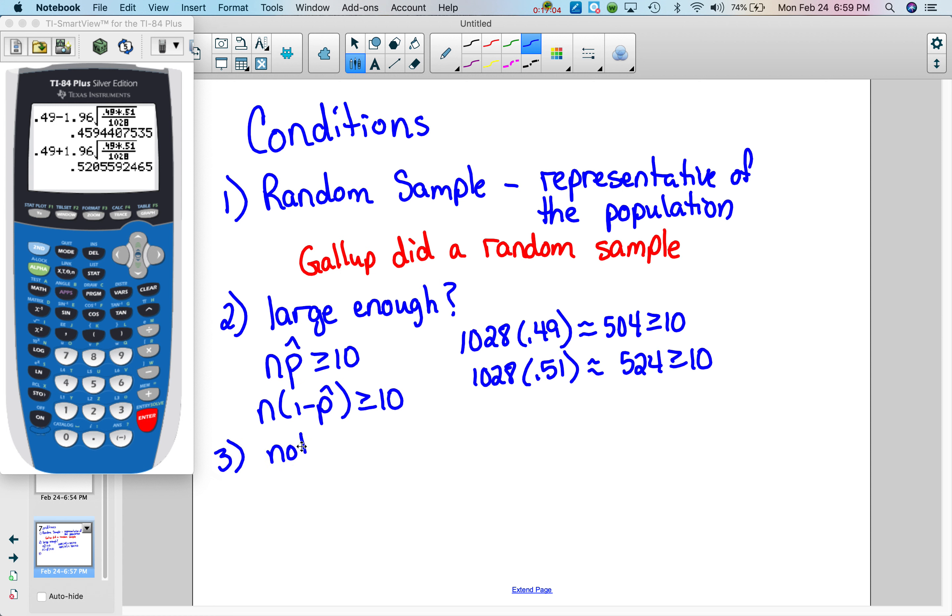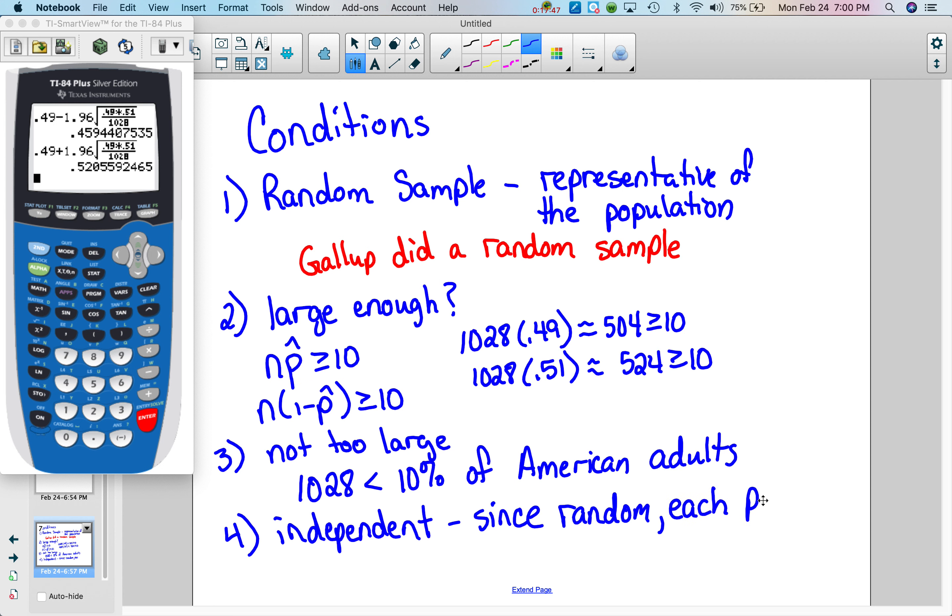Our third condition, not too large. For this, we could say that 1,028 is less than 10% of American adults. And we do want to make sure that we have independent samples. Since it's random, each person should be independent.